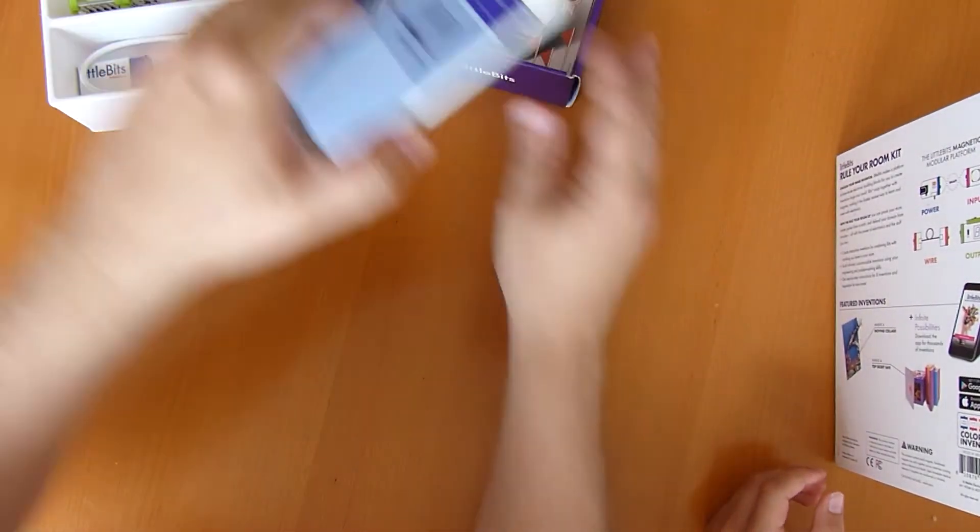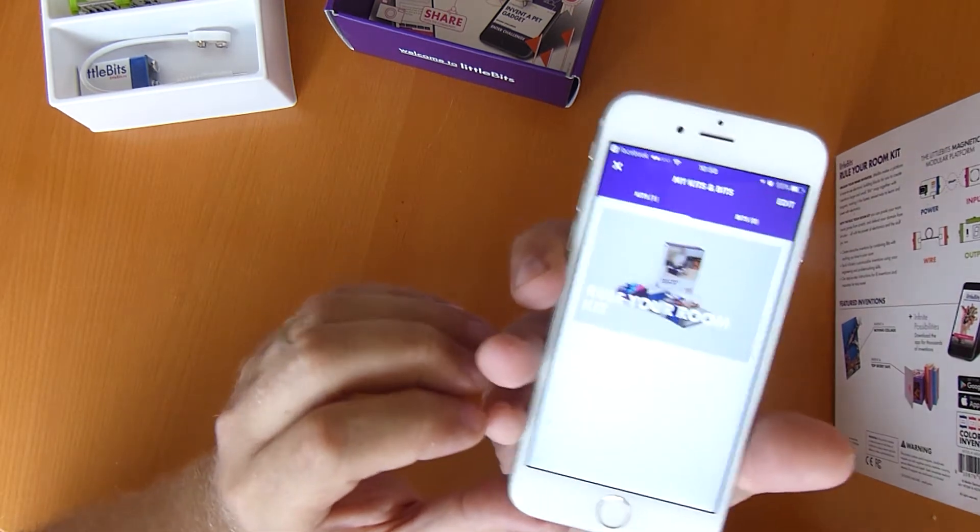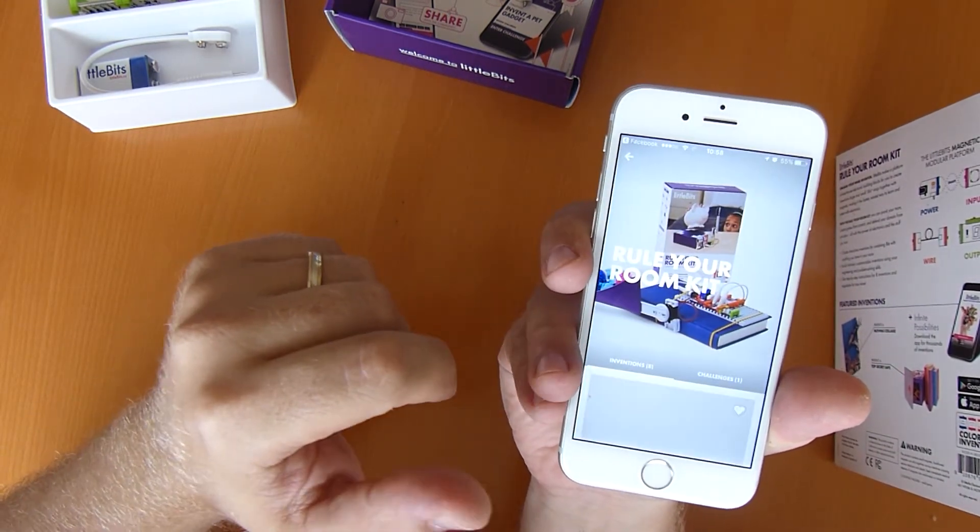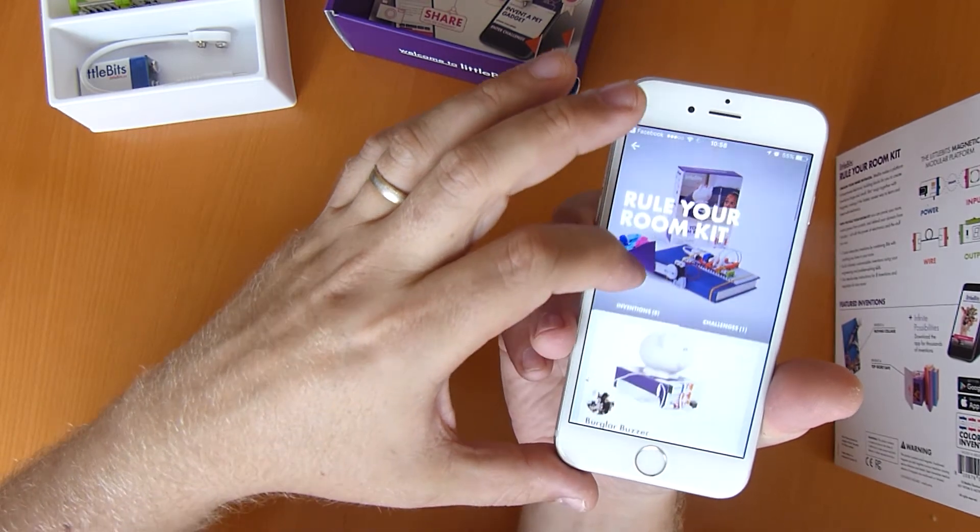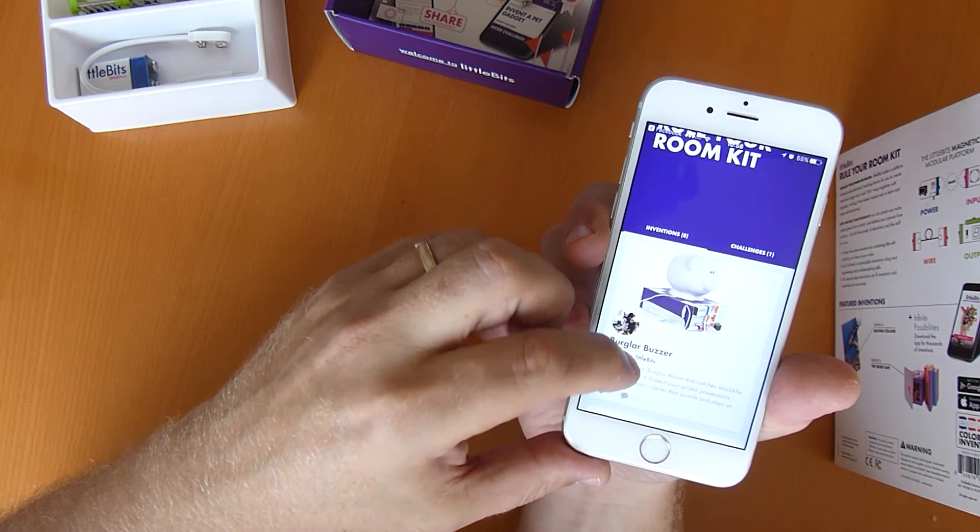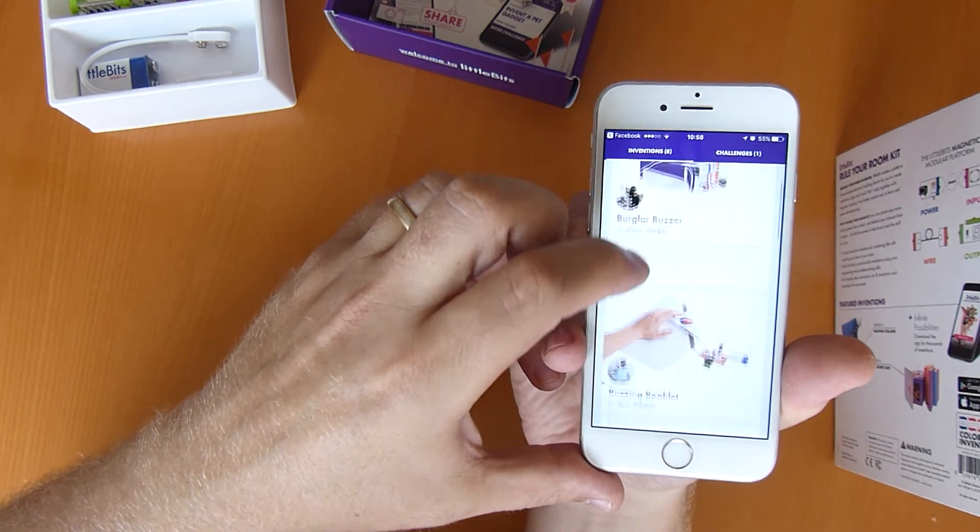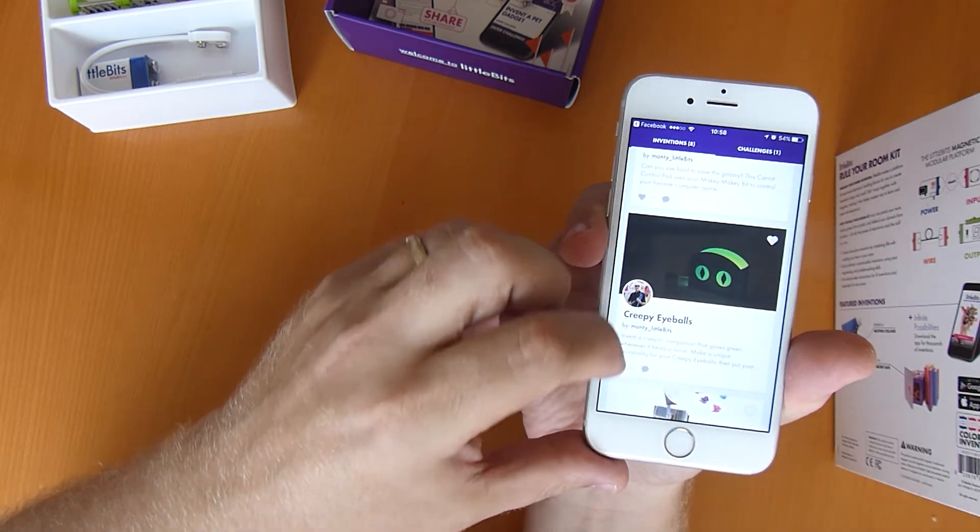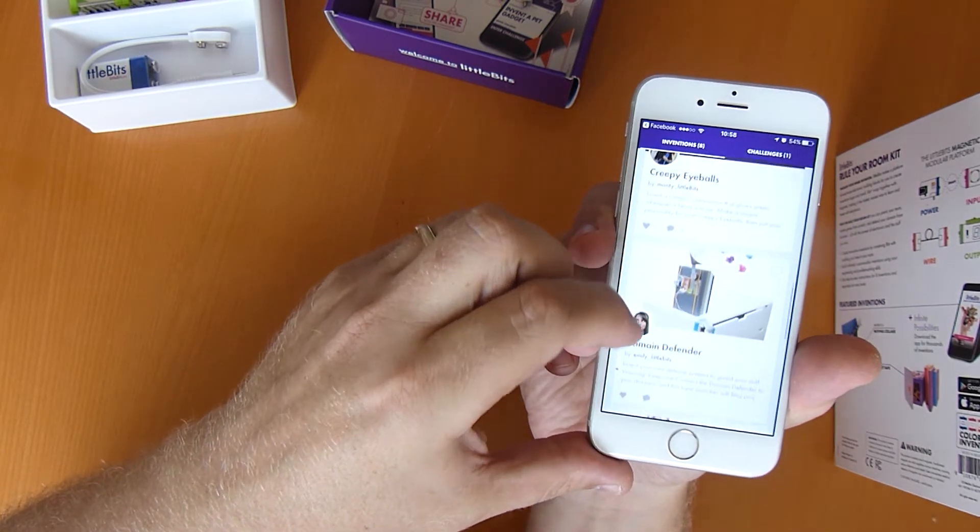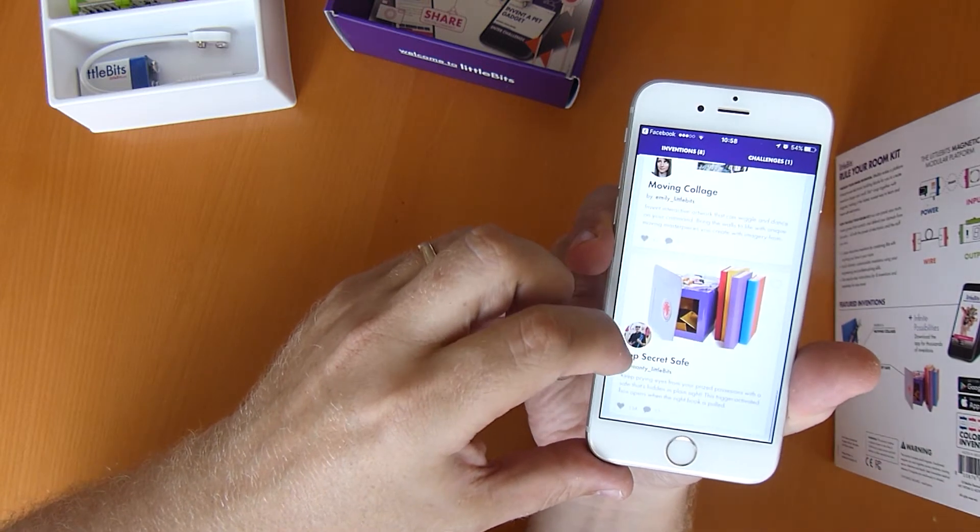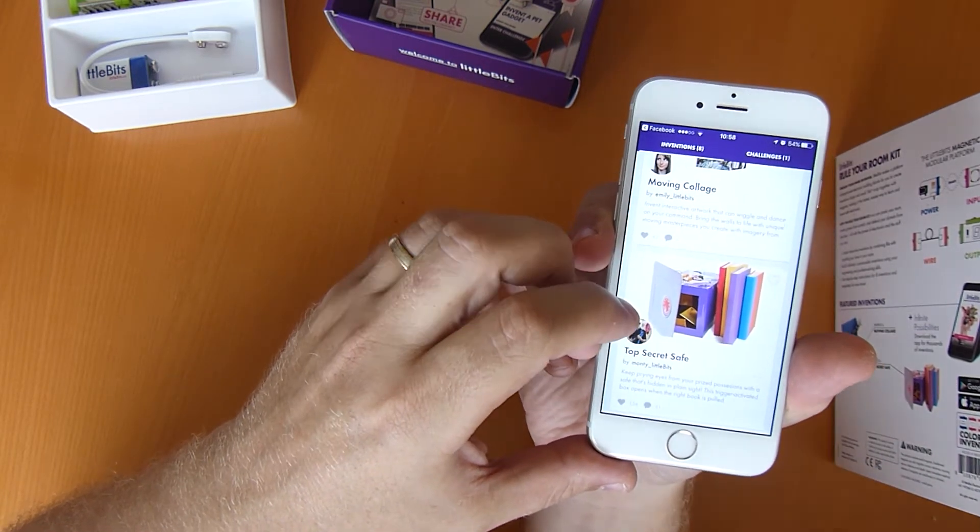Move those out of the way. And then the app. We've selected the build your own room kit. It gives you some inventions. So some of these are in the book. The burglar buzzer we've seen in the book. And the buzzing book. There we are. Creepy eyeballs. That's the one we're going to do.